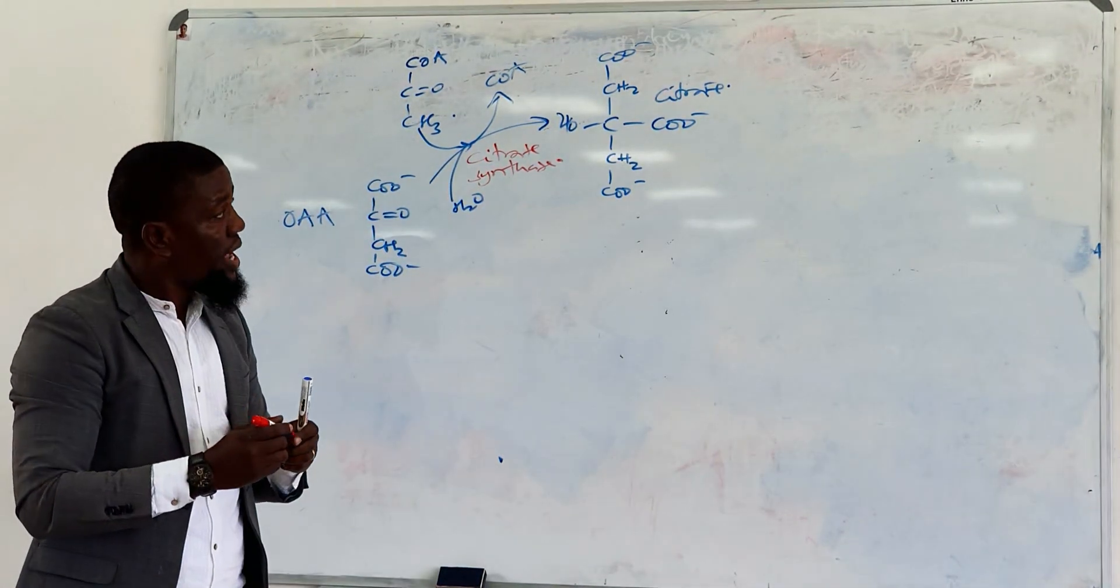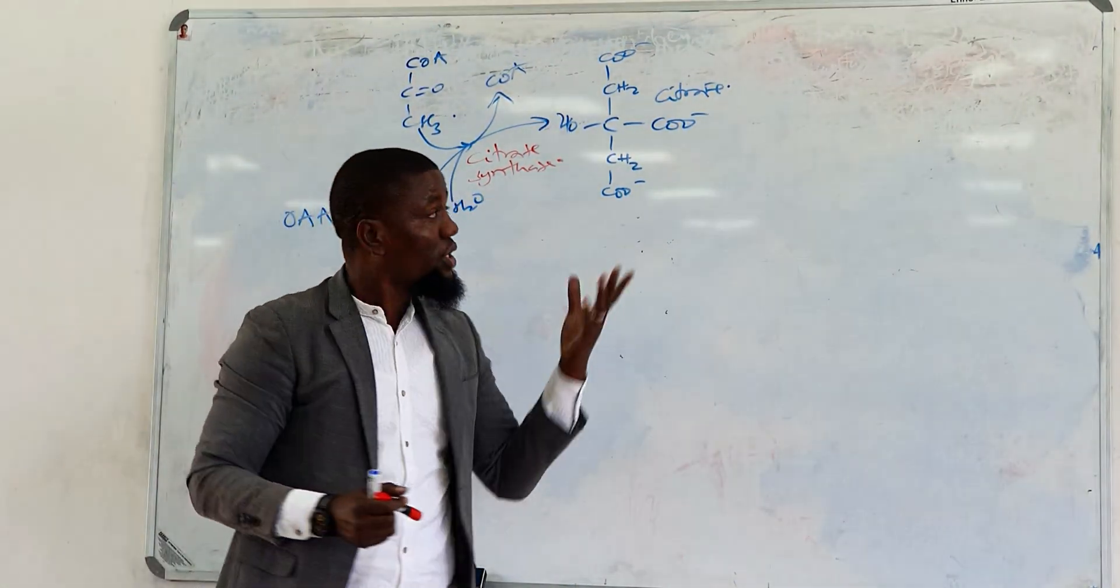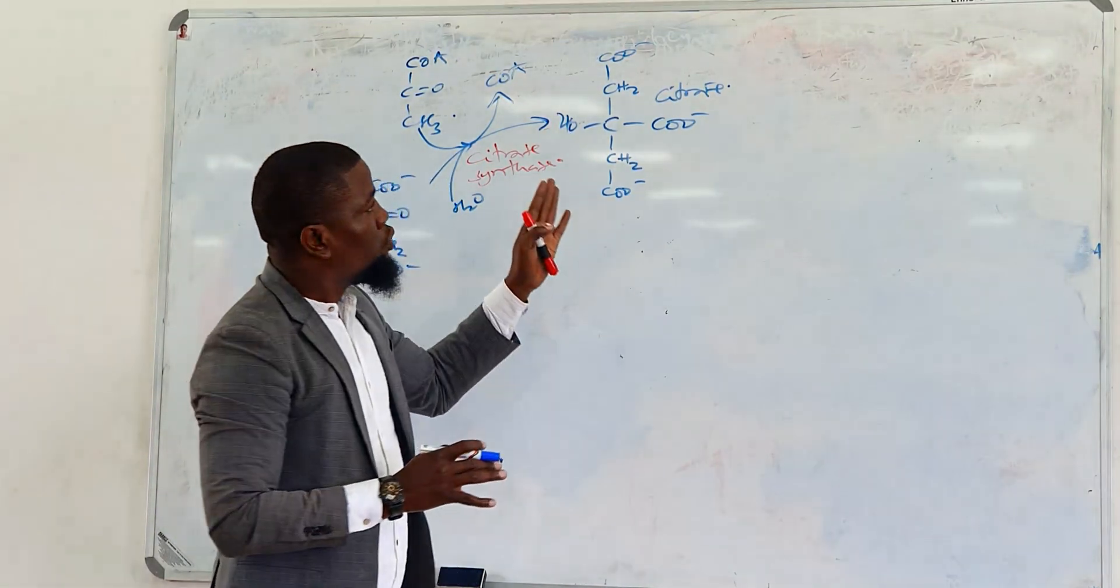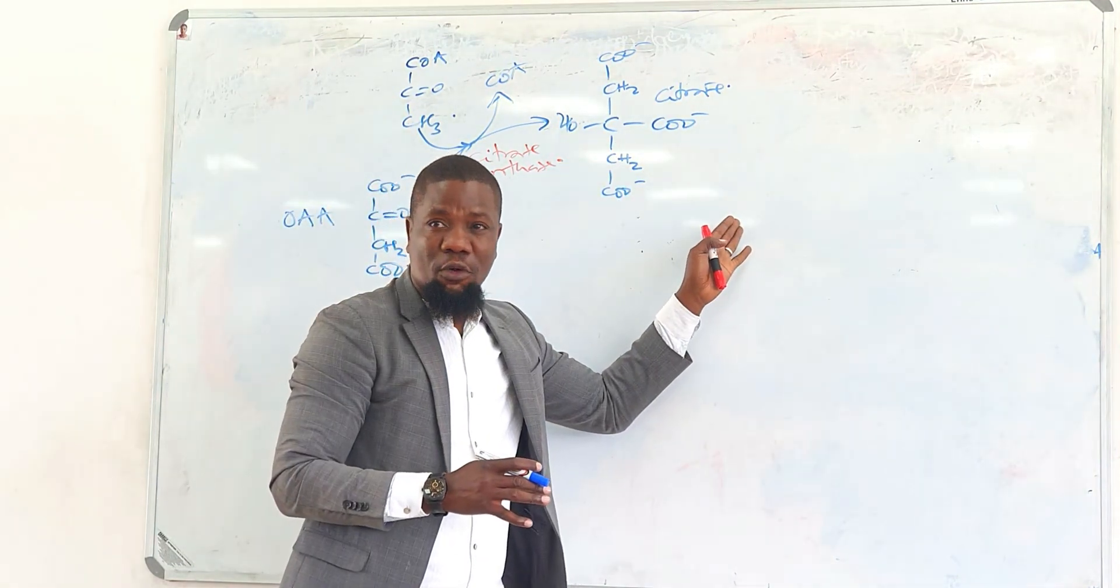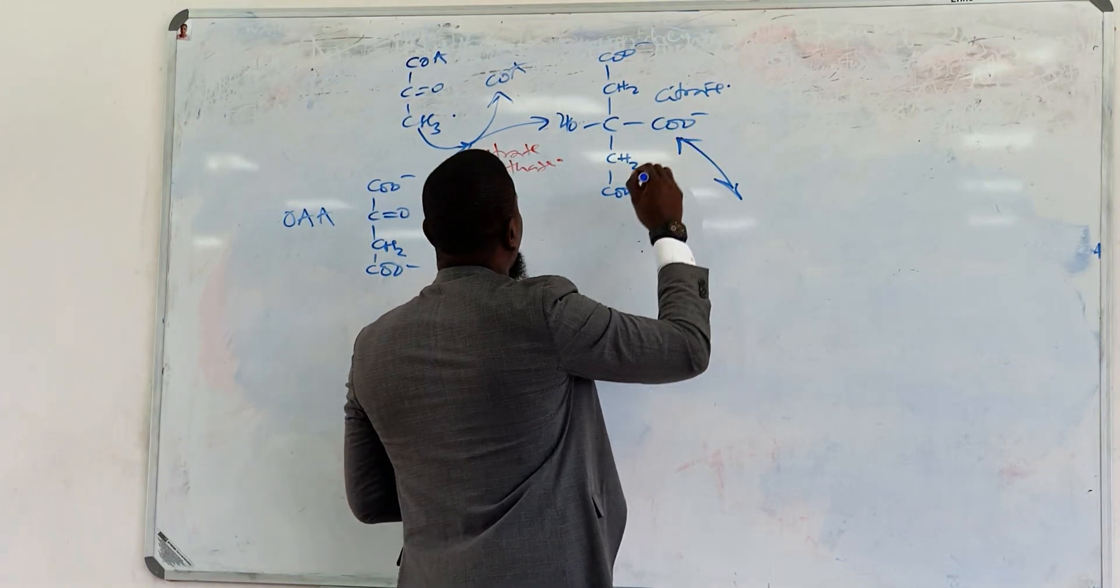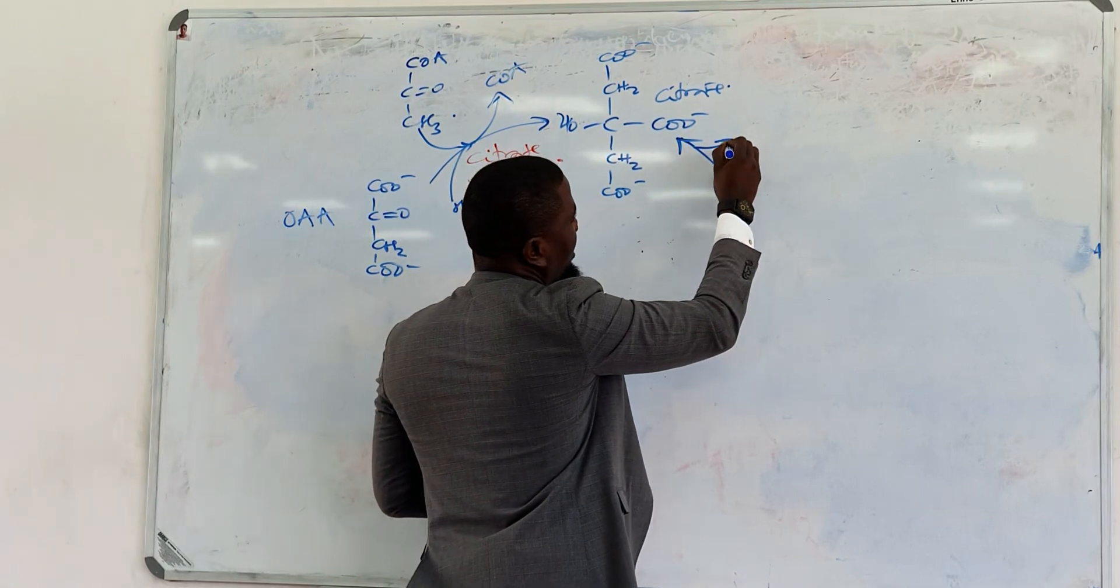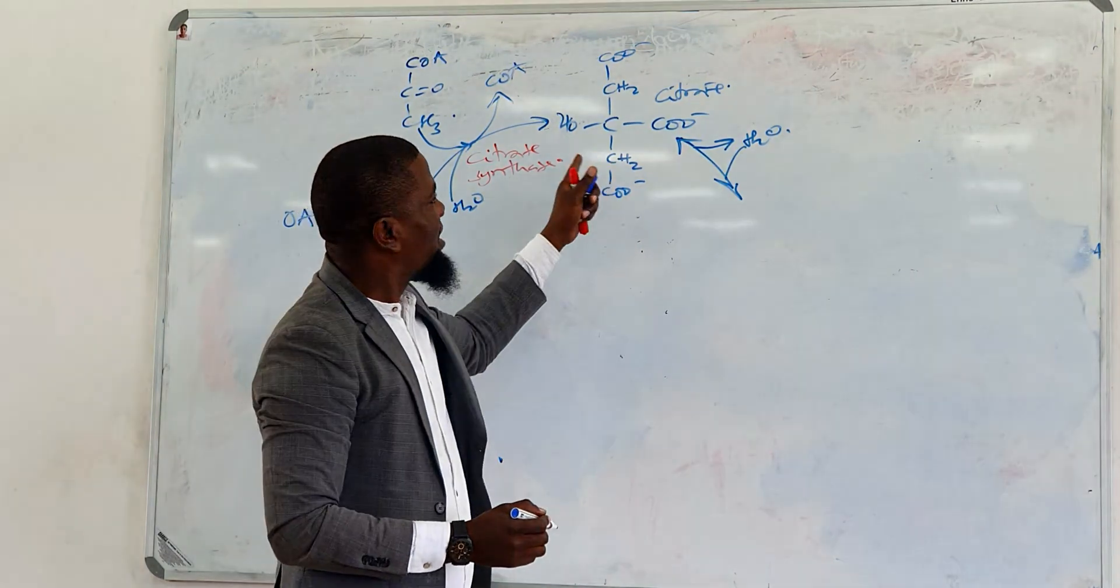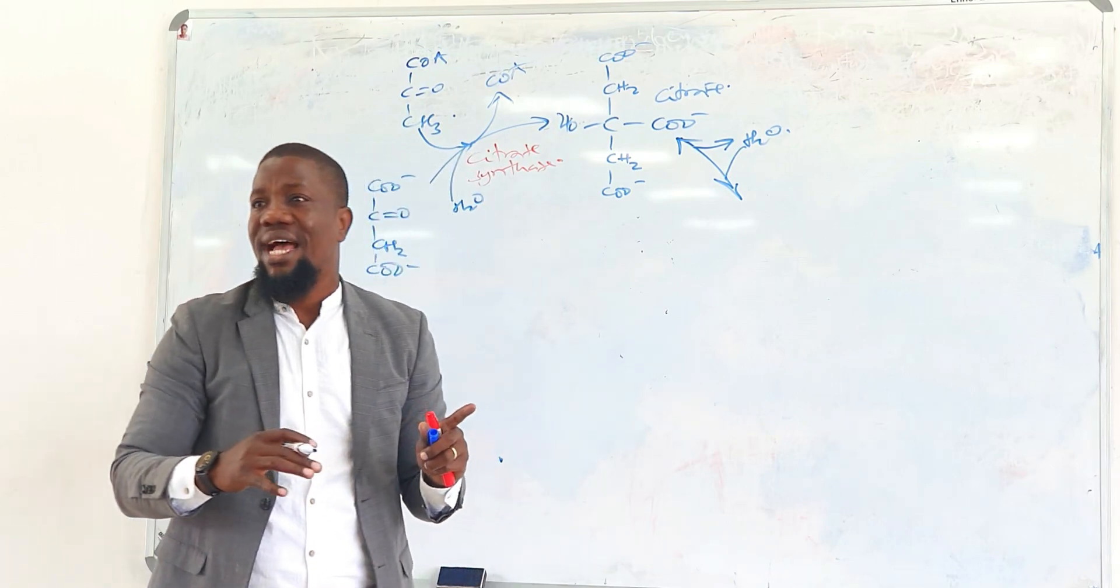The next reaction is that this citrate is going to be isomerized into isocitrate. Basically, this reaction, when you check it in most books, it won't show the fact that there will be an intermediate that will be formed. How this happens is that the citrate is actually going to be first dehydrated, then rehydrated. When citrate is dehydrated, it will form an intermediate called cisaconitate.